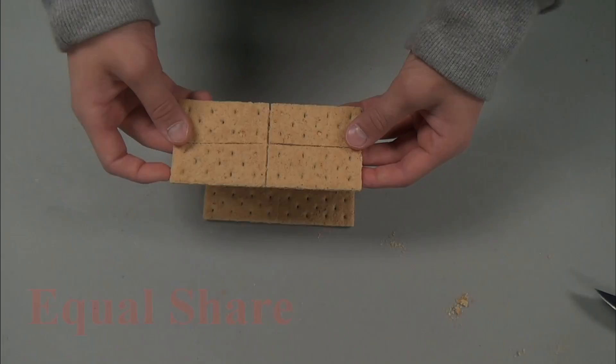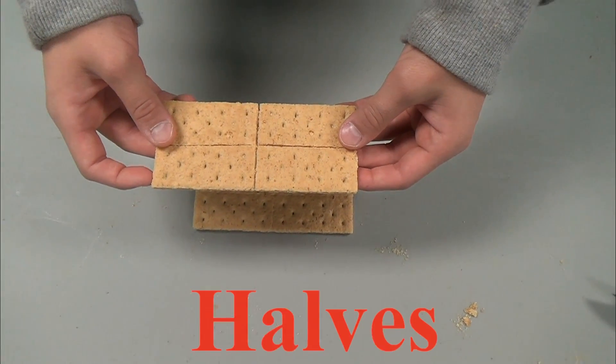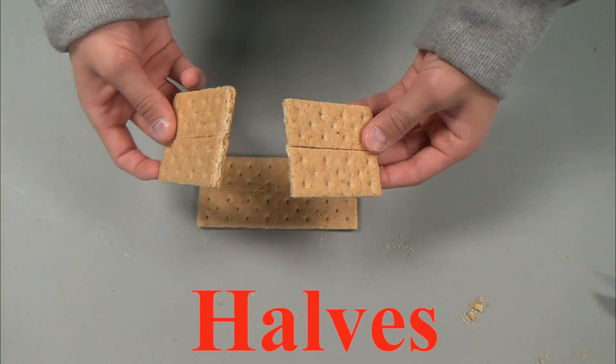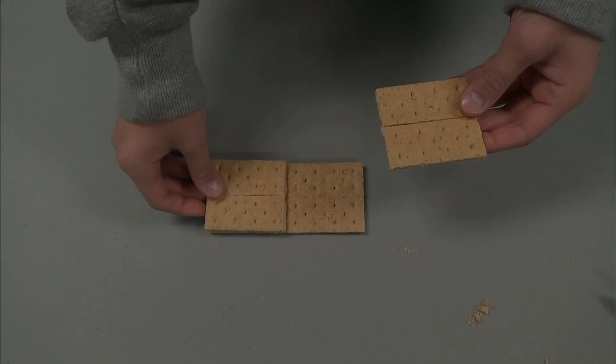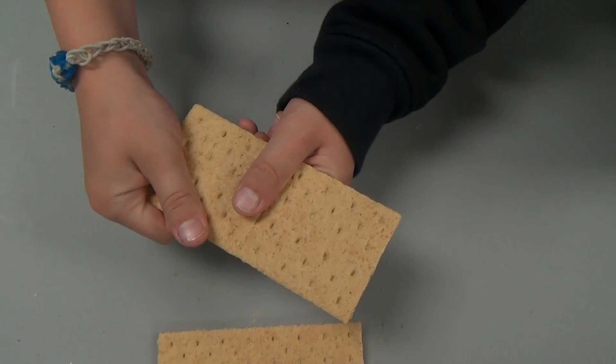When you have more than one fraction, and both are one half, we call them halves. You can even have several halves, but we will talk about that later. I'm getting this fraction stuff, so tell me more.